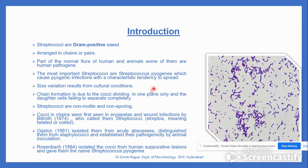Size variation will result from the various cultural conditions. Chain formation occurs due to cocci dividing in one plane only and the daughter cells failing to separate completely, so they form the chain.